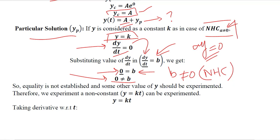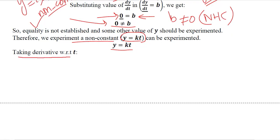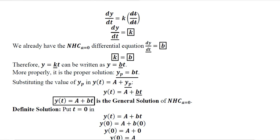Since the constant assumption failed, we move to the second assumption: y is not a constant. That is, y is not just equal to k but k times t. We experiment with this non-constant assumption and find the derivative with respect to t. Taking the derivative of kt, we get dy/dt equal to k.